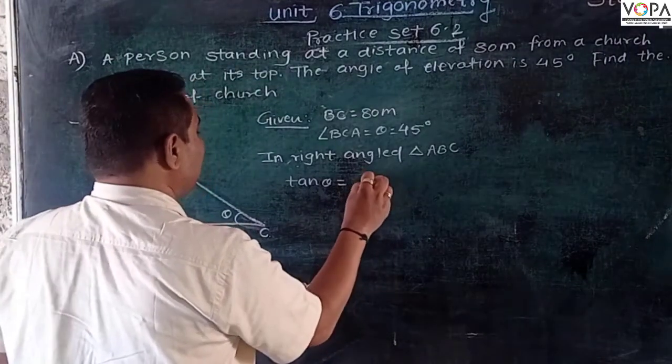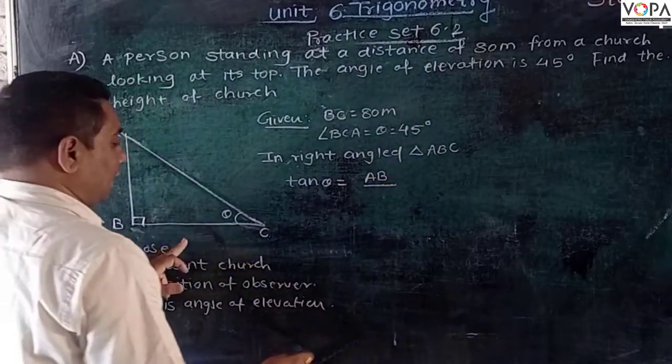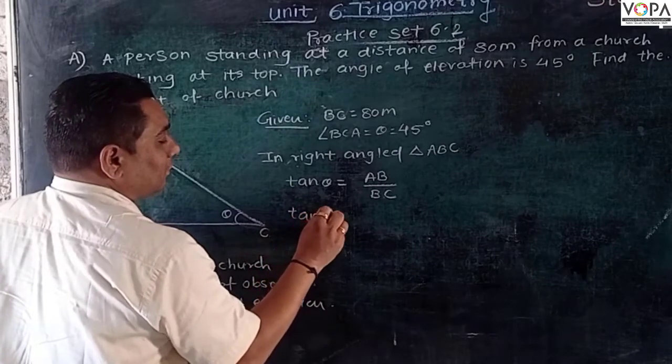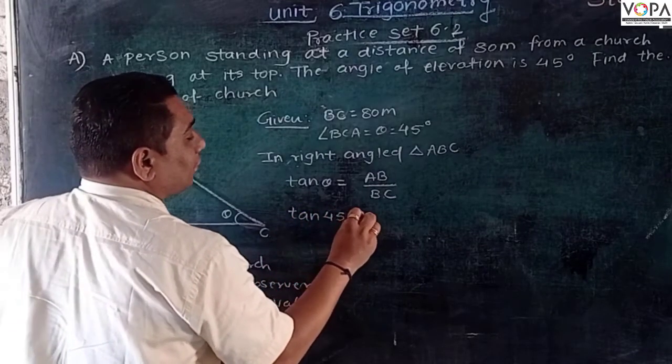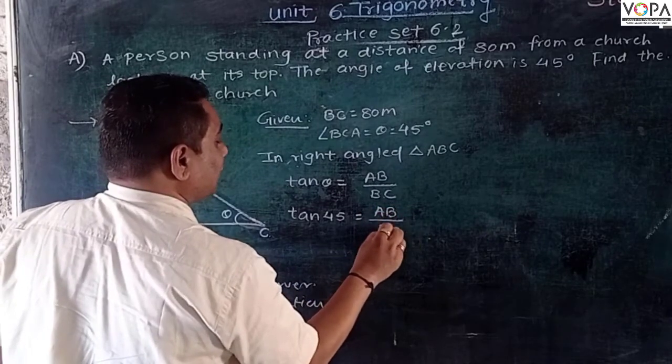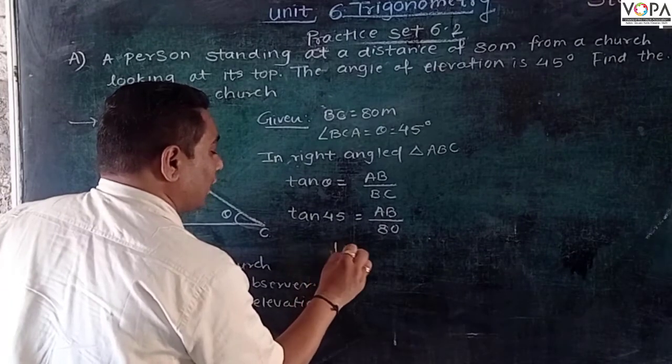So by putting the values, tan 45 equals AB over BC. We want to calculate AB, BC equals 80. So tan 45 is 1.